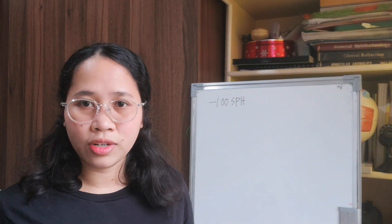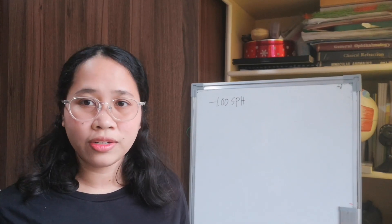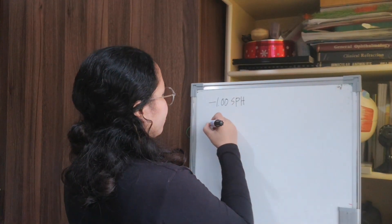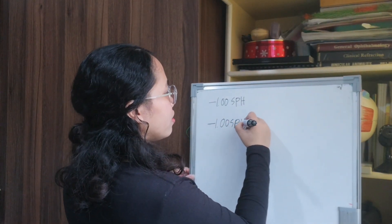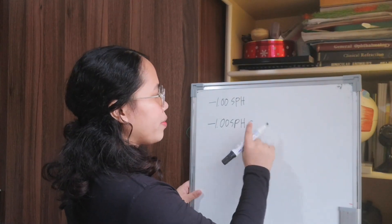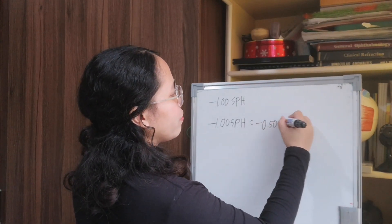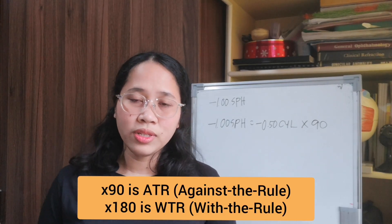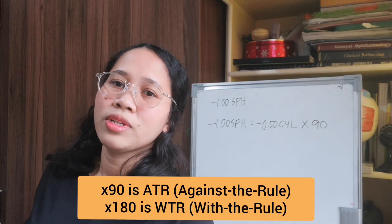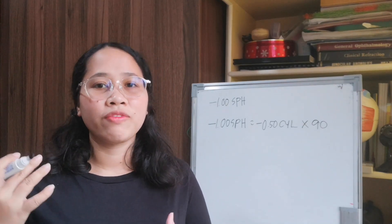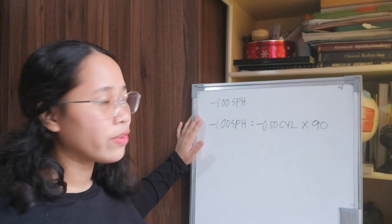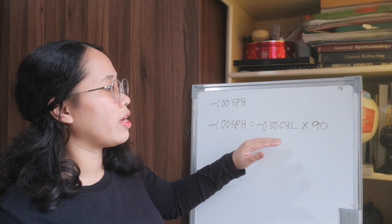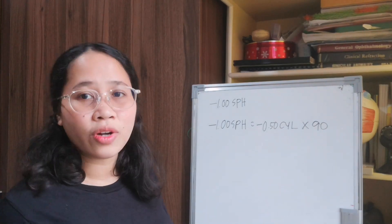How do you write a spherocylinder? A spherocylinder is a combination of a sphere and a cylinder together with an axis. For example, minus one sphere combined with minus 50 cylinder axis 90. Note that axis 90 is against the rule, and 180 is with the rule. This is an example of a spherocylinder form.